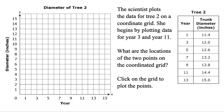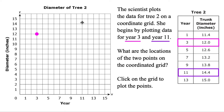This one looks complex but it's really just asking us to plot some points — for year 3 and year 11. For year 3, we go right 3 on the x-axis and up to 12 on the y-axis, then click that point. For year 11, we go to 14.4 on the y-axis — that's up to 14 and then 0.4, about halfway — and click somewhere around there. That's it; we just plotted those two points on the coordinate grid.